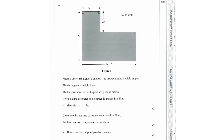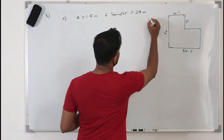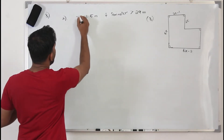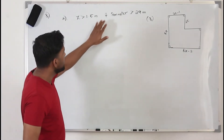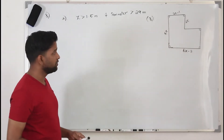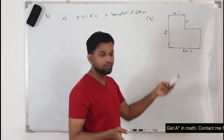We are given a shape, a plan of a garden where the marked angles are 90 degrees and the edges are straight lines. The lengths are shown in the diagram in meters. Our first question is: given that the perimeter of the garden is greater than 29 meters, show that x is greater than 1.5 meters. To find the perimeter of the shape, we take the lengths of all the boundary lines and add them up together.